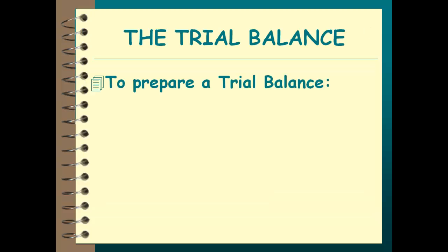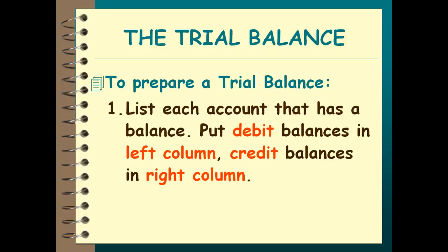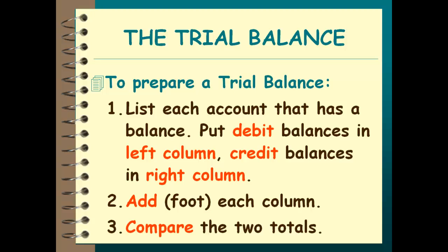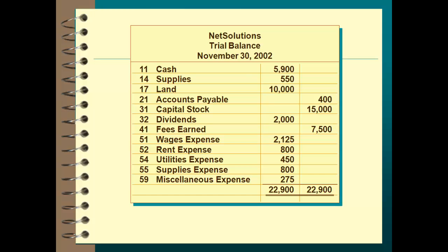So, how do we prepare the trial balance? We go to the general ledger, we list each account, and we list its ending balance. If it's a debit, we put it in the left column. If it's a credit, we put it in the right column. And then we add them up — that's called footing. If you add up a column of numbers, we add them up and then we compare the two totals. Hopefully, we find that the dollar amount of my debits and the dollar amount of my credits is equal.